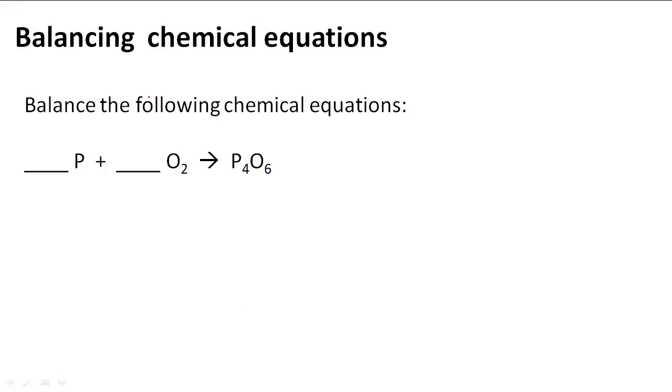Balancing chemical equations. In this problem it says balance the following chemical equation. We have phosphorus plus O₂ yields P₄O₆.